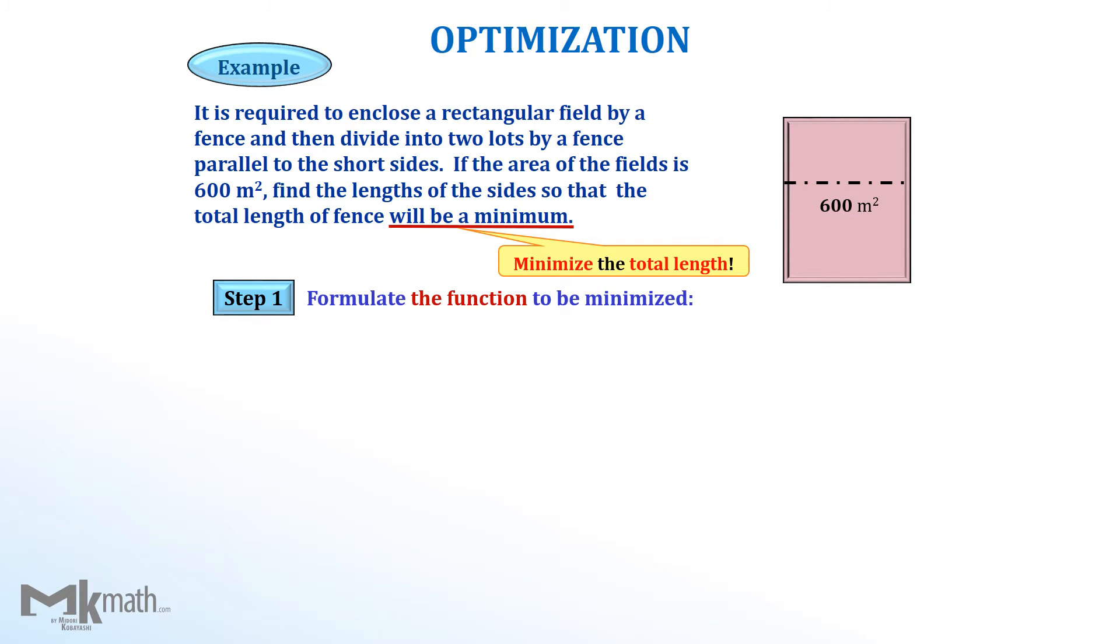Step 1, find the total length function. Let w be the width and l be the length of the field. As you can see, there are three widths and two length sides in the field. Therefore, the total length should be t equal 3w plus 2l.